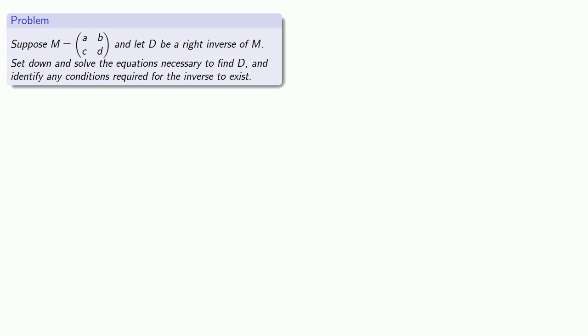So let's suppose I have a matrix M and I want to find a right inverse of M. First of all, let's see if we can set up and solve the equations necessary to find D. And since it's possible that this right inverse might not exist, let's identify any conditions required for the inverse to exist.